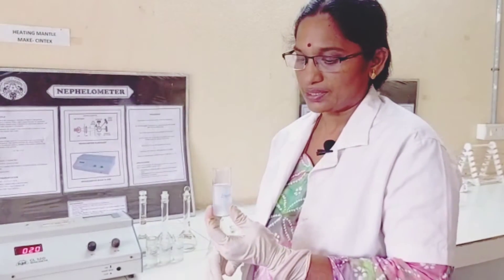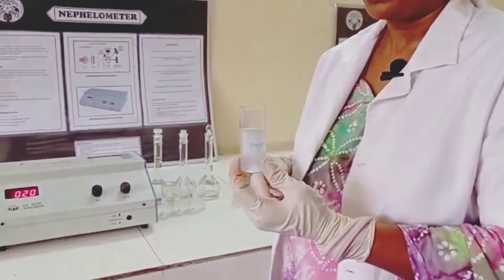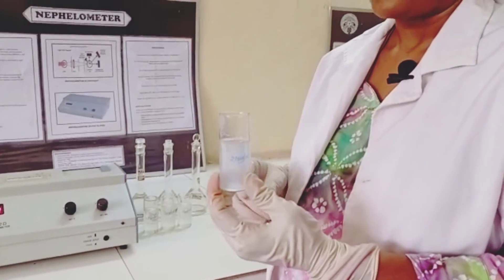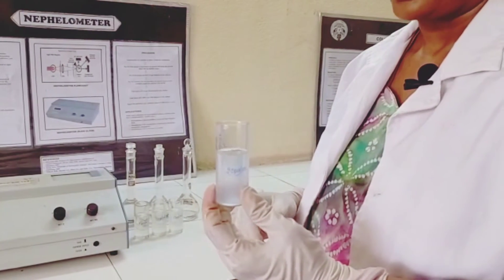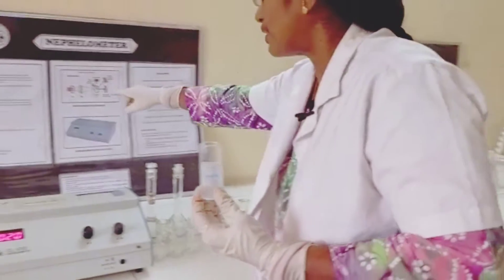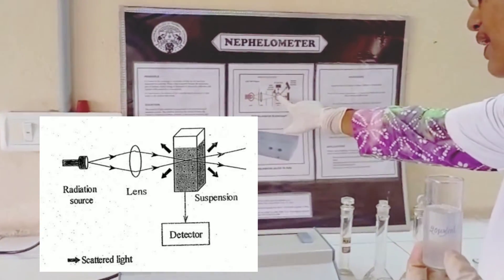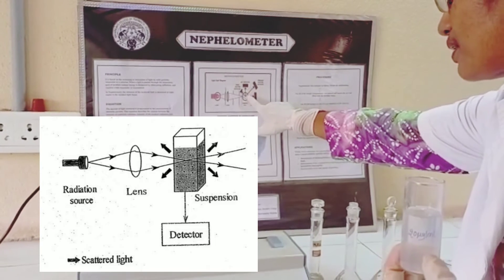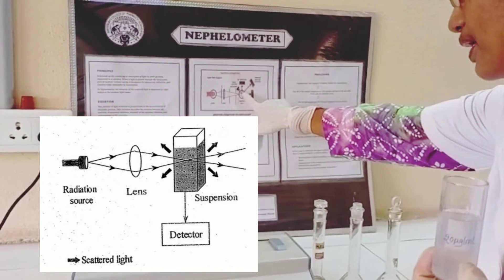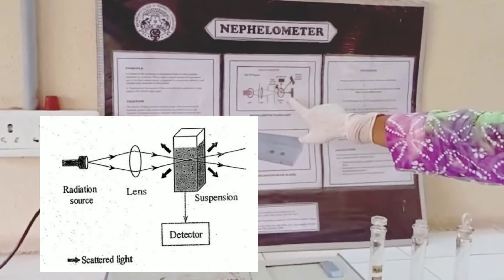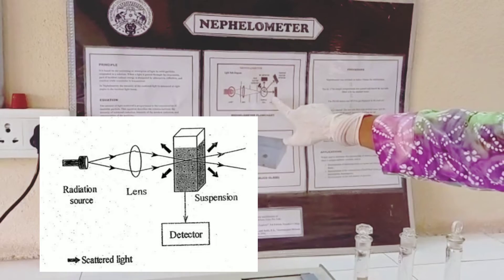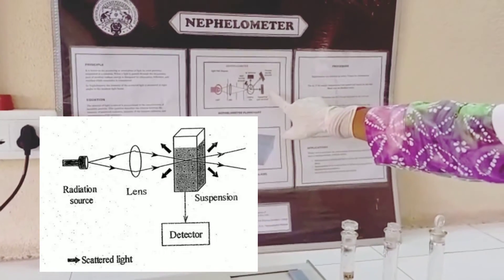The principle involved in nephelometry is measurement of the intensity of the scattered light. Here is a barium sulphate suspension — when light passes through this barium sulphate solution, the light gets scattered in all directions. You can see when light passes through the solution it gets scattered in different directions, and the scattered light is collected and measured at certain angles. We get the scattered intensity readings in the form of NTU, that is nepheloturbidometric units.